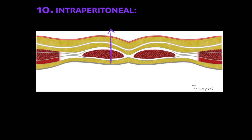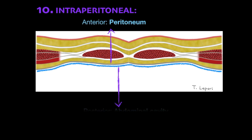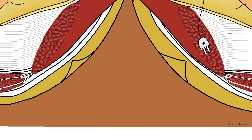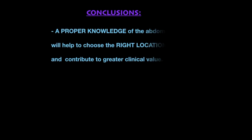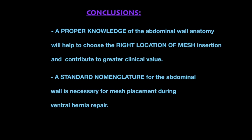The intraperitoneal plane is delimited by the peritoneum anteriorly and the abdominal cavity. A proper knowledge of abdominal wall anatomy will help to choose the right location for mesh insertion and contribute to greater clinical value. A standard nomenclature for the abdominal wall is necessary for mesh placement during ventral hernia repair.